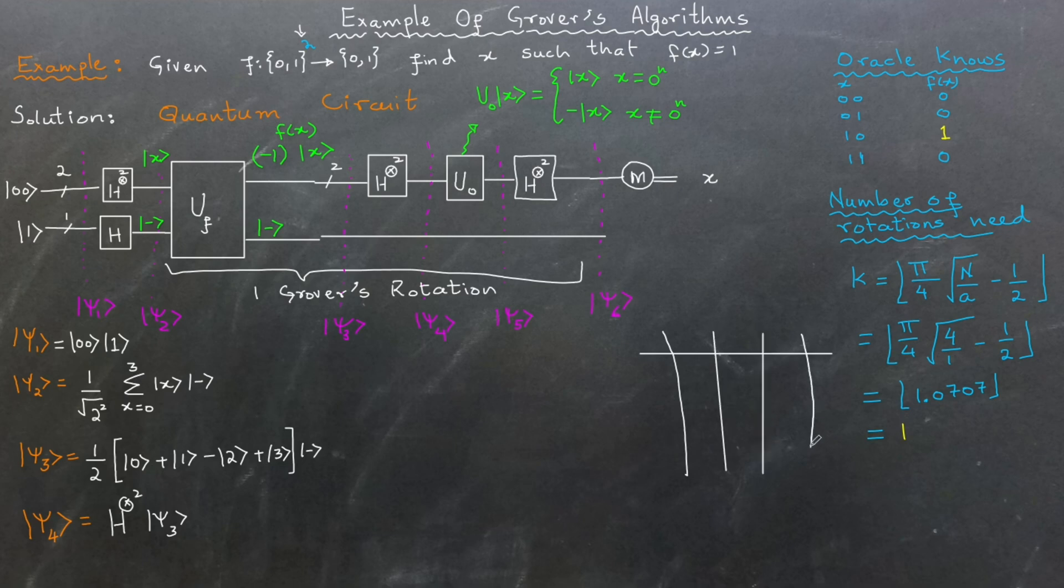The table contains all possible 2-bit values as columns: 00, 01, 10, and 11. The rows represent the current states of the first register, that is |00⟩, |01⟩, −|10⟩, and |11⟩.